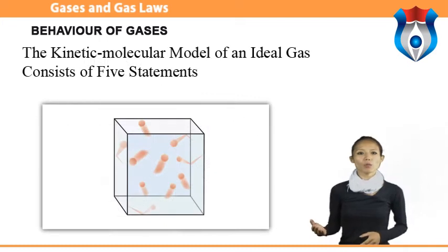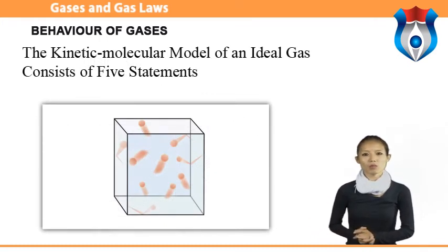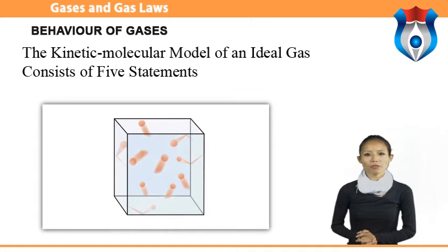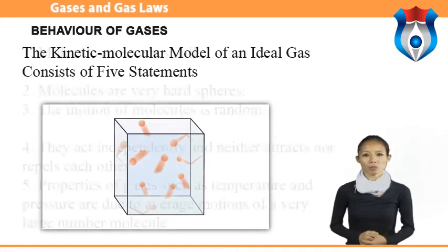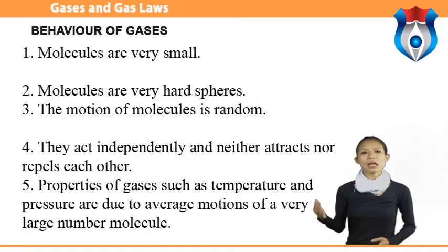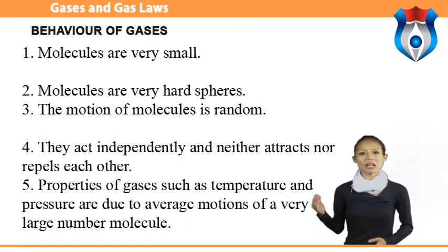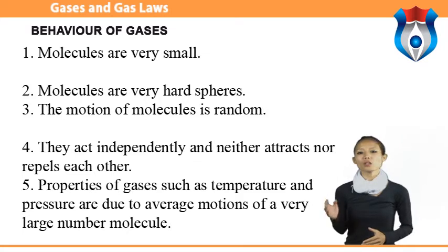The kinetic molecular model of an ideal gas consists of five statements. First, molecules are very small and far apart — most of a container of gas is empty space. Second, molecules are very hard spheres that bounce off each other without losing energy in encounters called elastic collisions. Third, the motion of molecules is random, and properties that depend on the motion of the molecules will be the same in all directions.